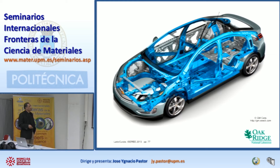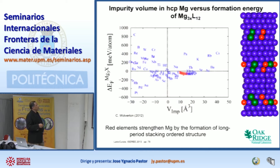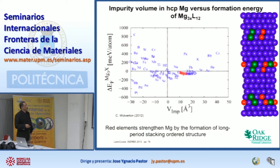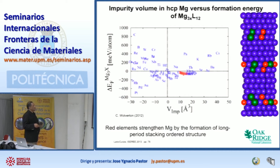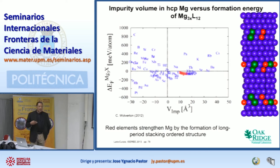People are also looking at structural materials and the idea of designing new materials using computers. One alloy we are very interested in is magnesium — it is a very light alloy with very low density, attractive for structural applications in transportation. The problem is that its creep resistance at room temperature is not very good, and it doesn't have a lot of ductility. Magnesium has an HCP hexagonal structure, making it difficult for dislocations to move. The idea is to find alloying elements to combine with magnesium to improve its formability using first principles calculations.